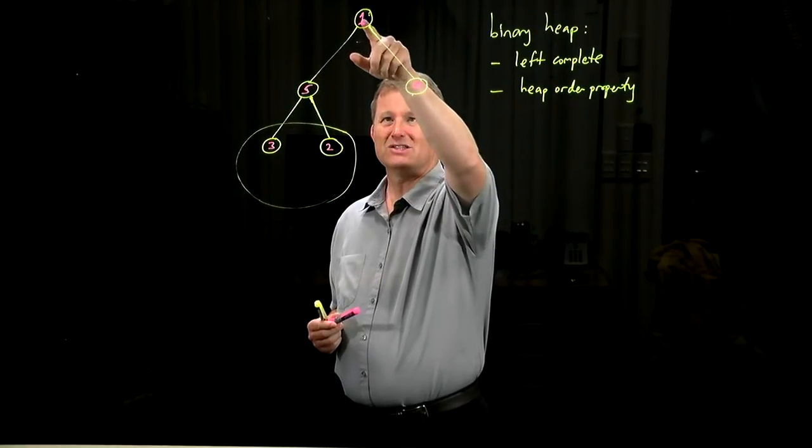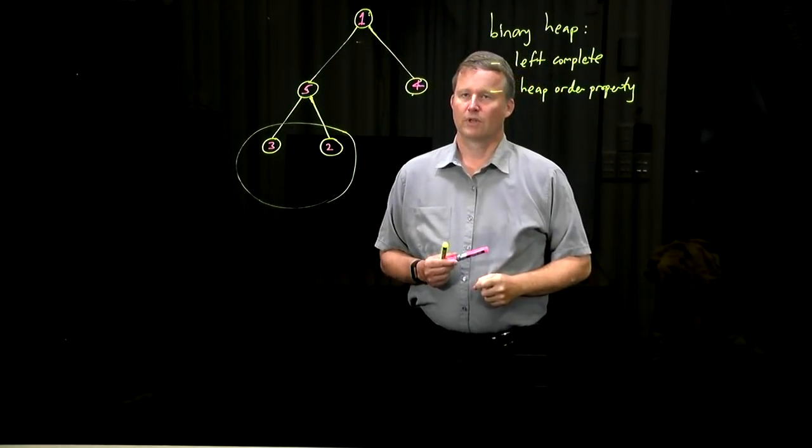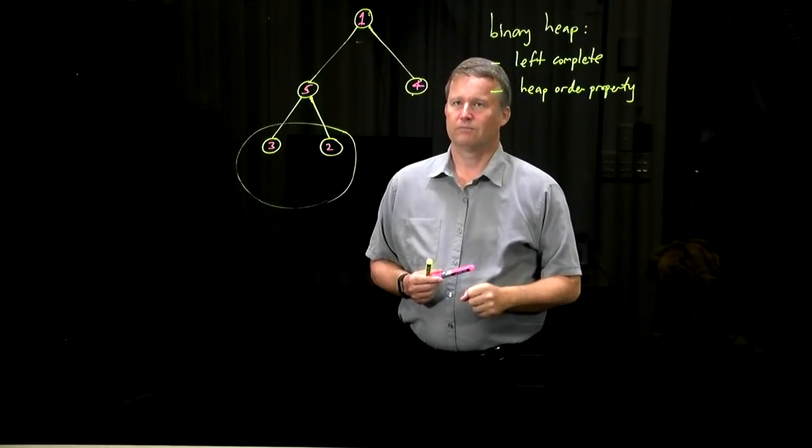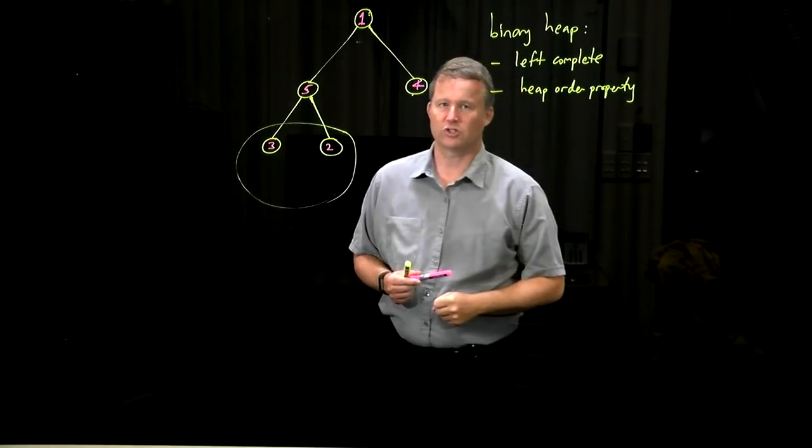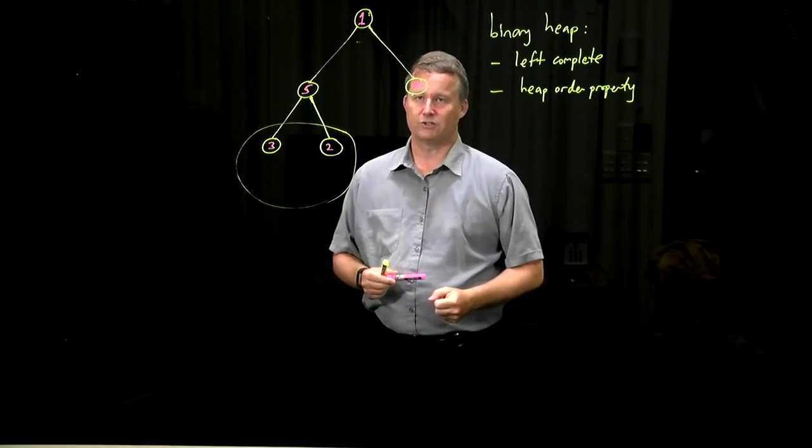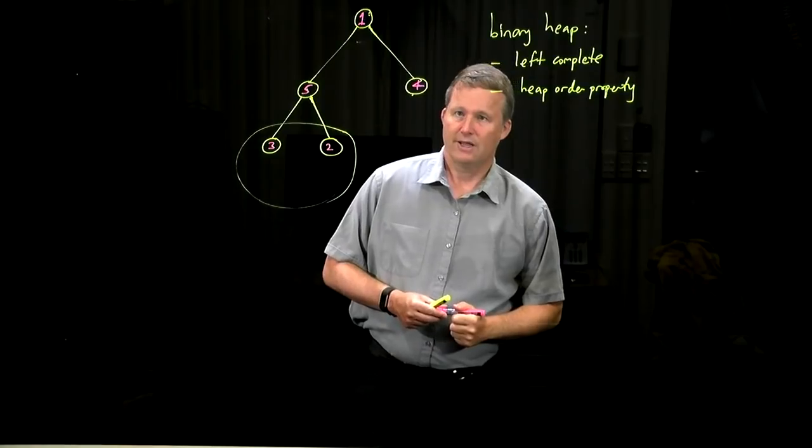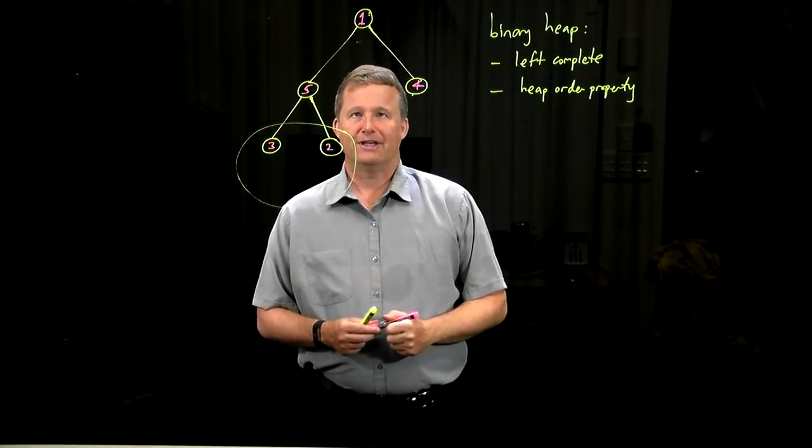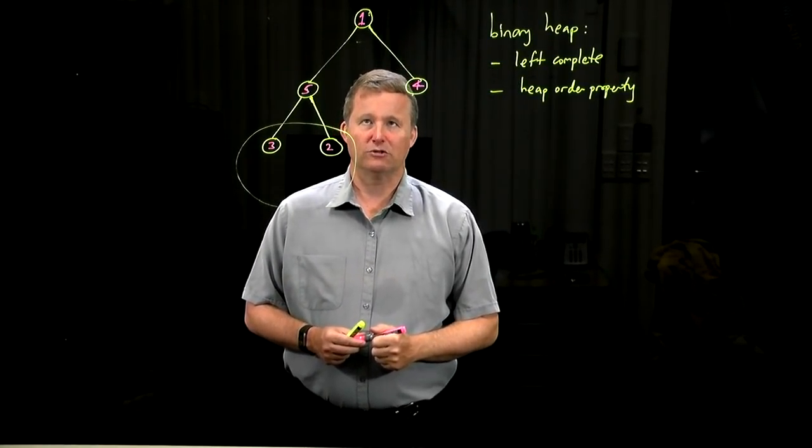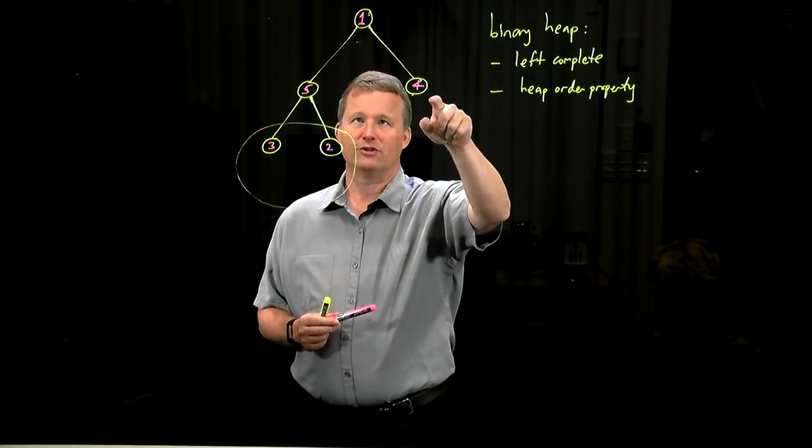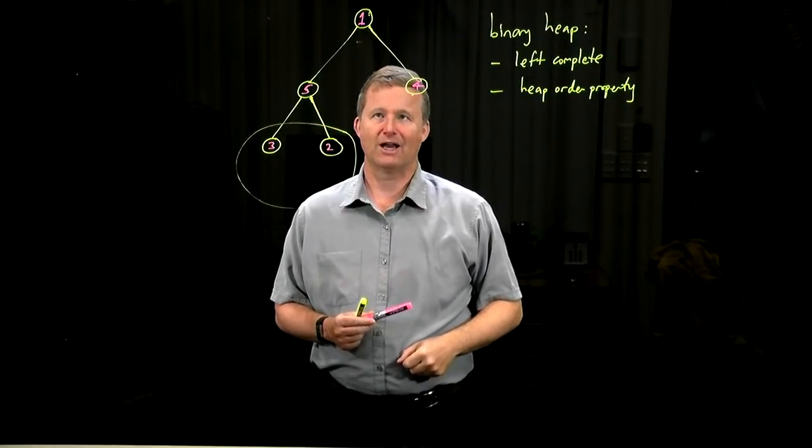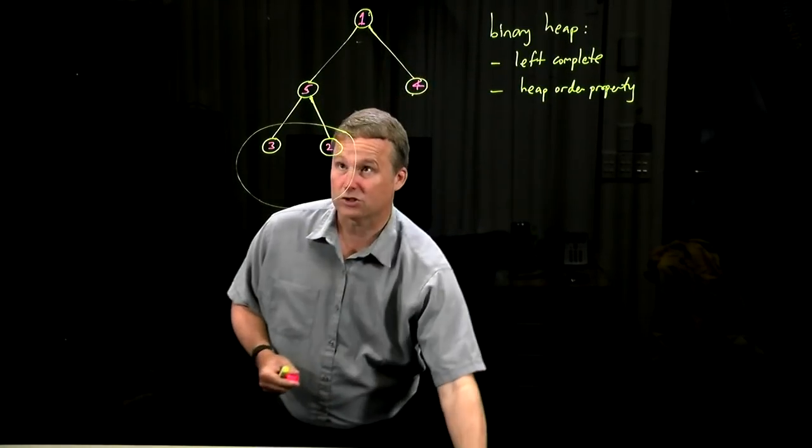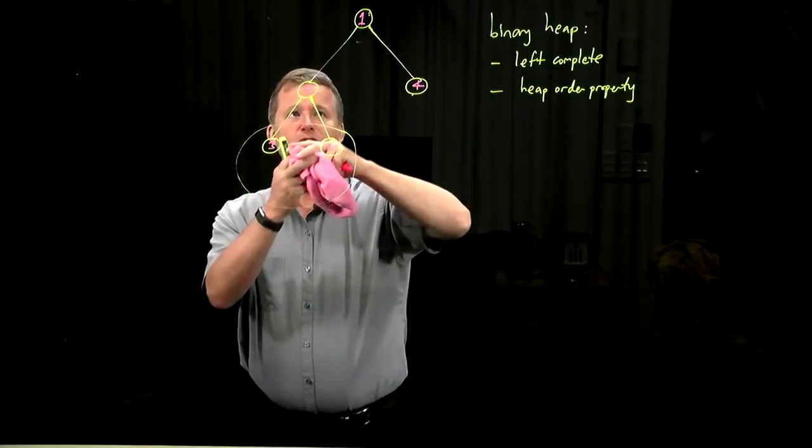And now everything is okay down in this subtree. We haven't destroyed the heap order property. This is okay, but this is not right. So we have to move that to the right place, the new root. It's got to sink down now to find its correct position. And the easiest way is to swap it with one of the children. If you swap it with the smaller of the two, four would come up here, five would be here, you'd have another violation. So it makes more sense to swap it down with the larger of the two.